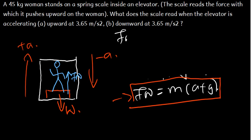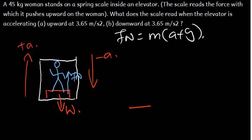So when it is accelerating upward, this acceleration is going to be positive. So we have the general formula, mass times (acceleration plus g). So we plug in the values.